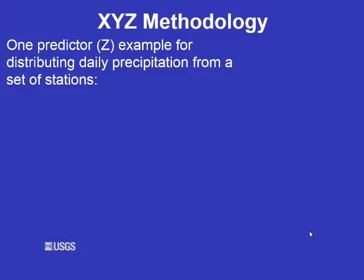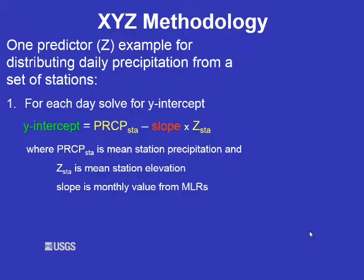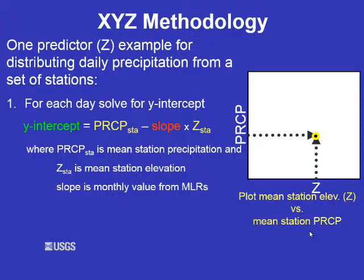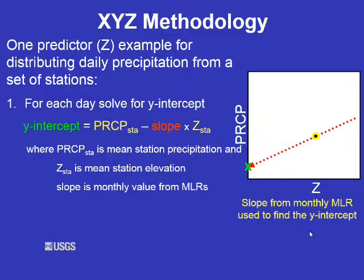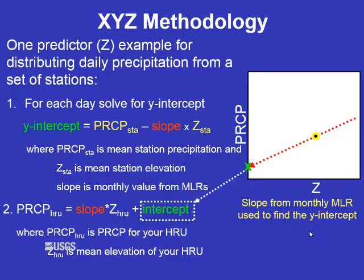Here is a one-predictor example using elevation Z to distribute daily precipitation from a set of stations. For each day, you are solving for B0, the Y-intercept, which equals the mean of the precipitation stations minus the slope times the mean of the elevations of those stations. Graphically, each day the mean station elevation is plotted versus the mean station precipitation. The slope through that point gives the Y-intercept value. Precipitation at the HRU is equal to the slope times the HRU elevation plus the Y-intercept.